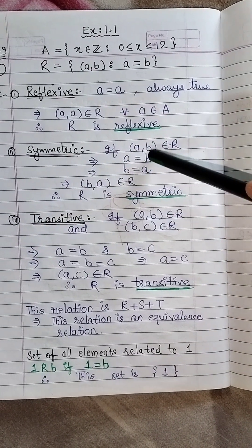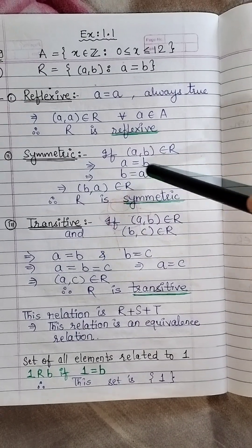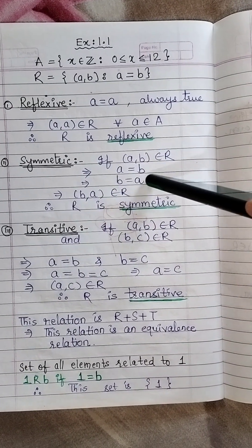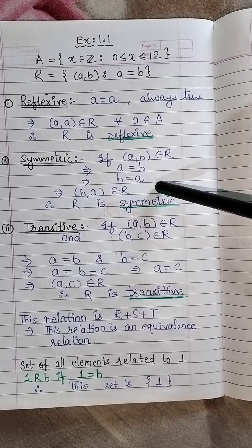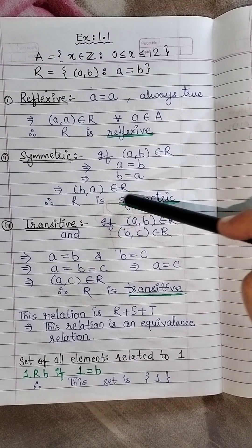For symmetric, you have to take a pair AB that belongs to R. Now if AB belongs to R, you have that A is equal to B. Once A is equal to B, you can write it as B is equal to A. So B, A, the pair B, A belongs to the relation and hence it is symmetric.